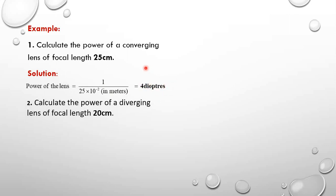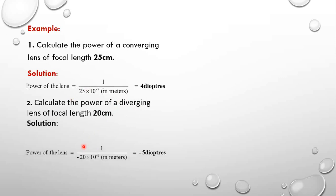Example 2: Calculate the power of a diverging lens of focal length 20 centimeters. Since this is a diverging lens, the focal length is negative: F equals negative 20 centimeters, which is negative 20 times 10 to the power negative 2 meters. Therefore the power equals 1 over (negative 20 × 10⁻²), which gives negative 5 diopters.